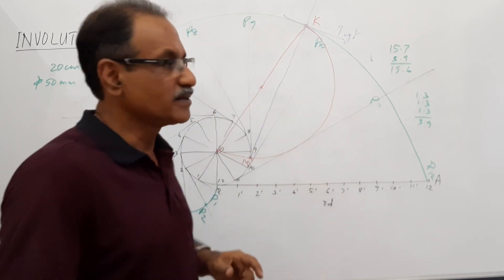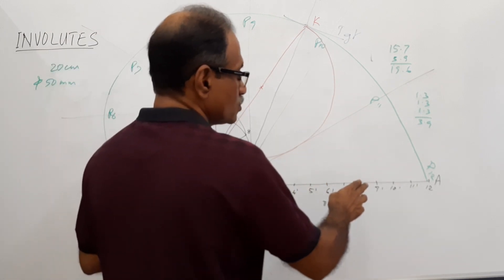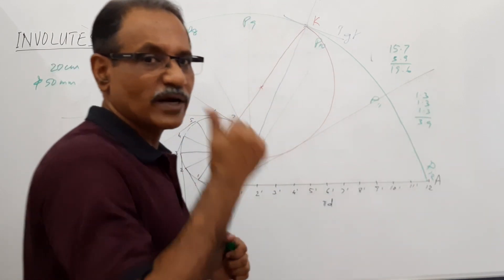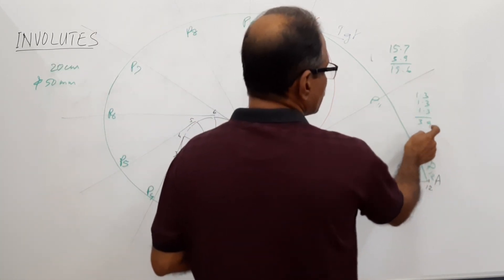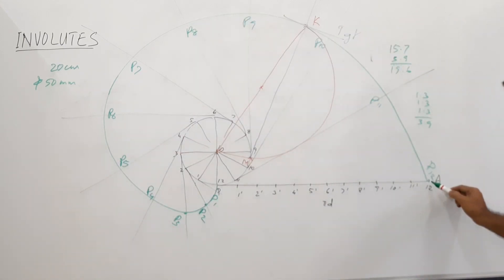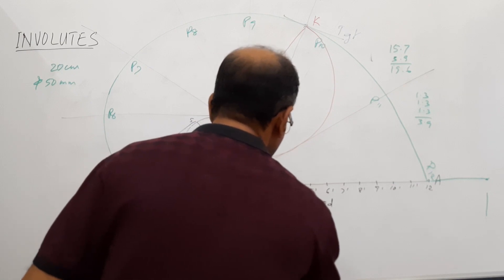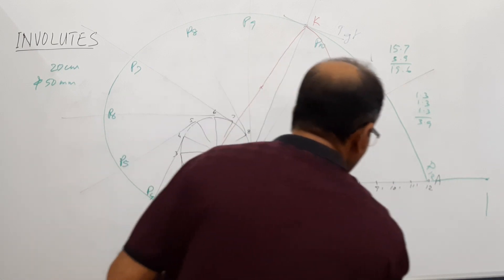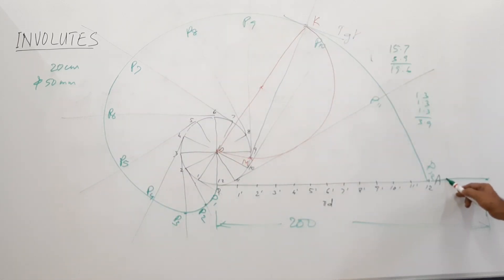How much needs to be added? 15.7 divided into 12 is almost 1.3, which is about 13 mm. After point 12 dash, there is another point called 13 dash. Take this distance of 1.3 and mark once again — 13 dash, 14 dash, 15 dash, then a last point called 16 dash.